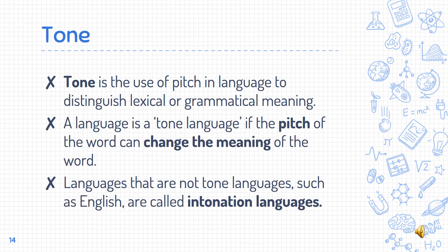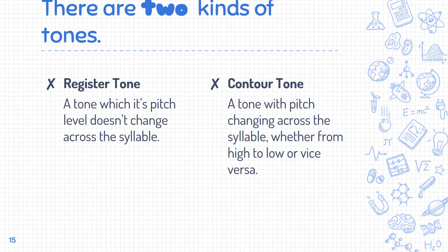Tone is the use of pitch in language to distinguish lexical or grammatical meaning. A language is a tone language if the pitch of a word can change its meaning. Languages that are not tone languages, such as English, are called intonation languages. There are two kinds of tones: first, register tone — a tone whose pitch level does not change across the syllable; second, contour tone — a tone with pitch changing across the syllable, whether from high to low or vice versa.